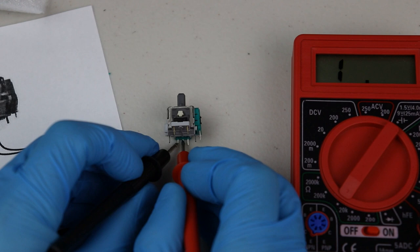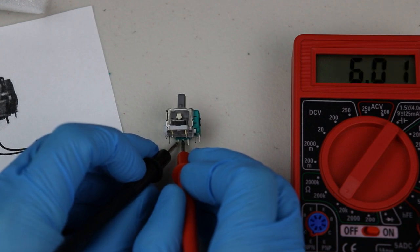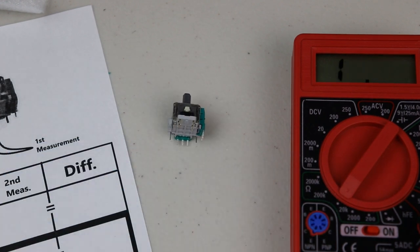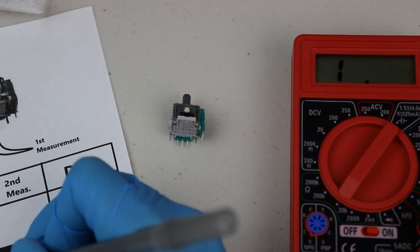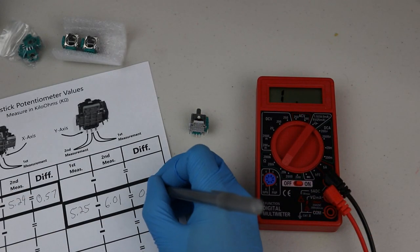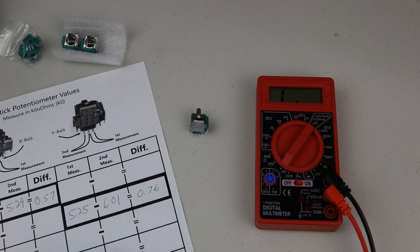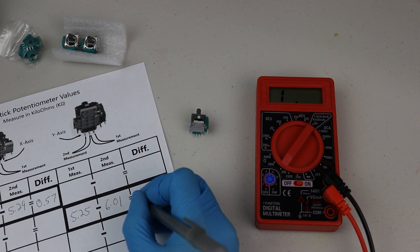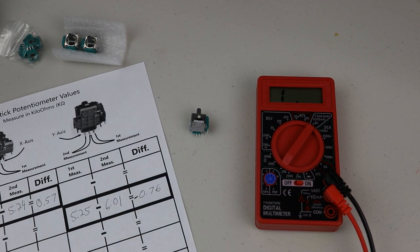It is worth noting that at this point you could swap the potentiometers and wipers around to get the diff values close to zero. This would give you a higher chance of not needing to change the joysticks again. Just make sure that when you do this that you write down the values that you end up with.